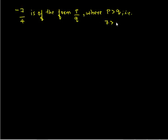Now, negative 7 upon 4 is of the form P upon Q where P is greater than Q. Here we have 7 greater than 4. We have to check the magnitudes of the numerator and the denominator. So, if P is greater than Q, then the rational number has to be converted to mixed fraction. That is, negative 7 upon 4 can be written as minus of 1, 3 upon 4.